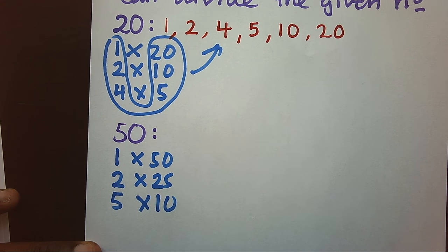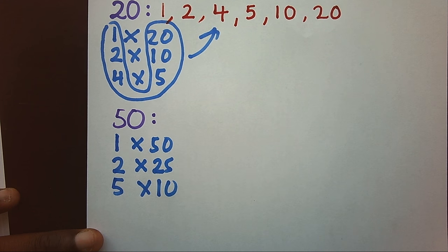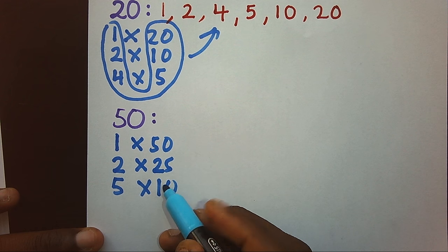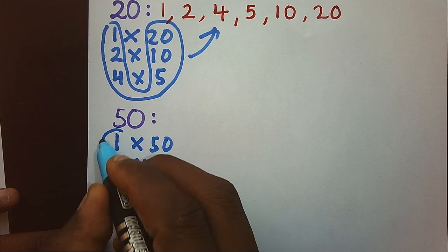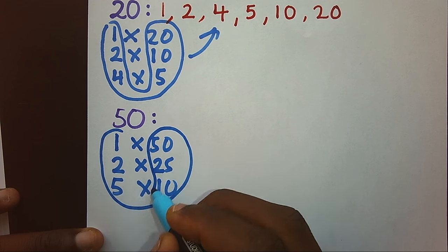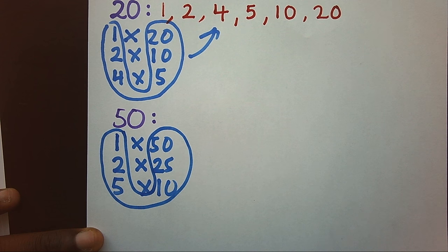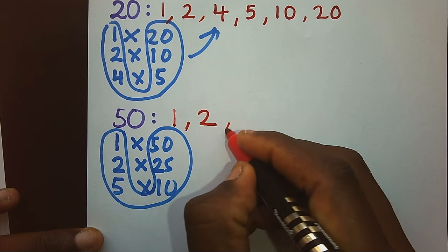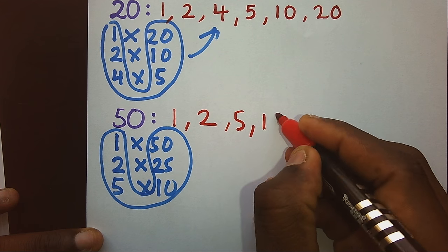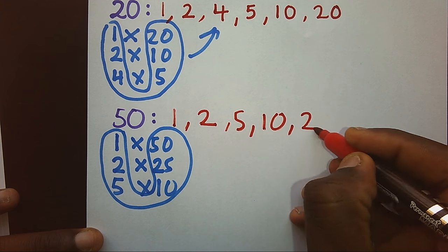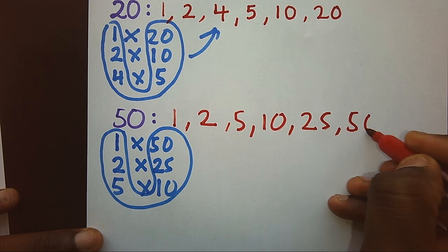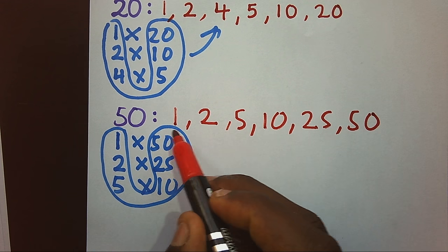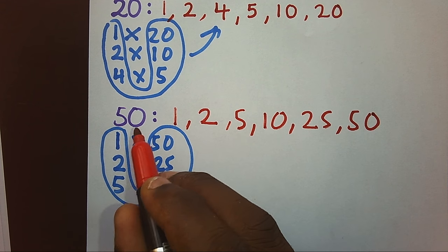6, 7, 8, and 9 are all not factors of 50. So we take all valid pairs and list them: 1, 2, 5, 10, 25, and 50. These are the factors of 50.